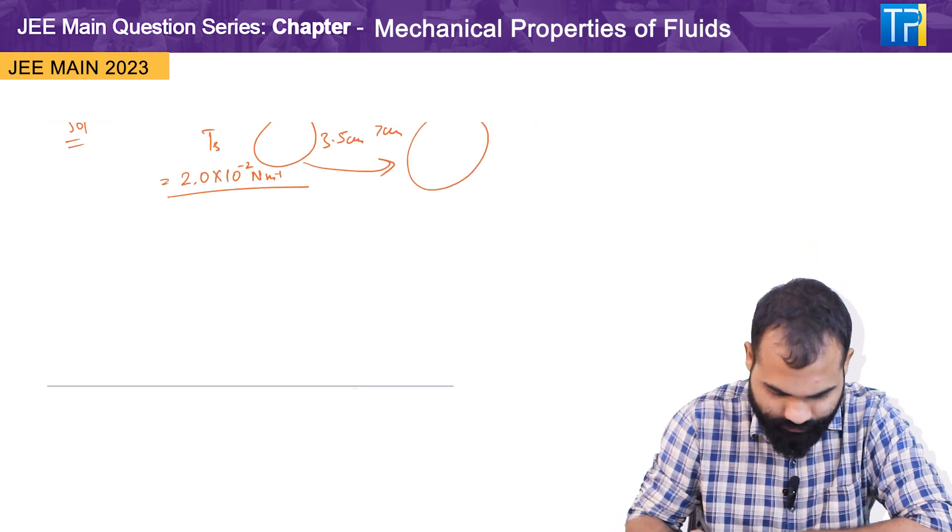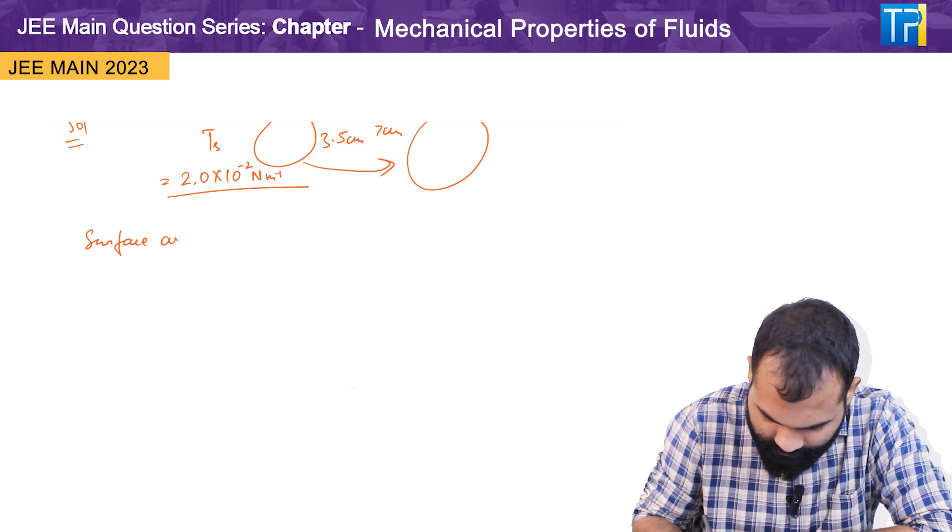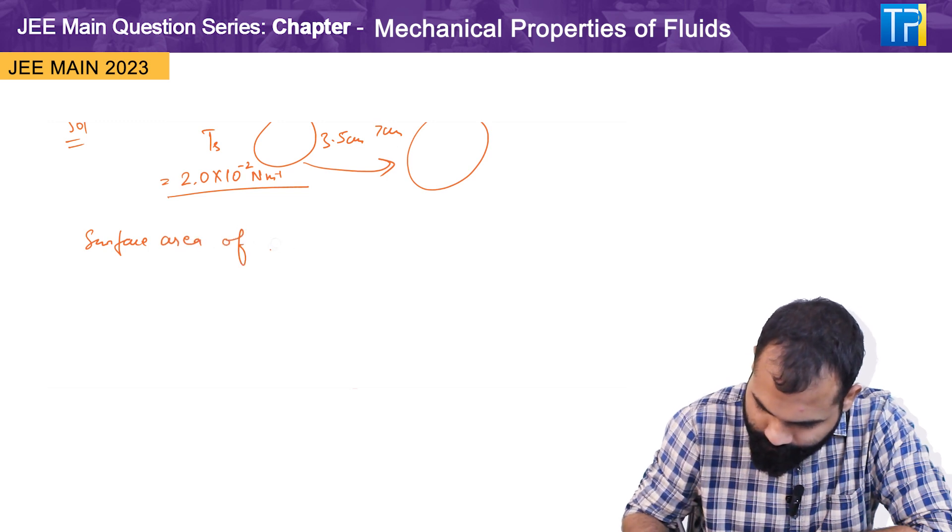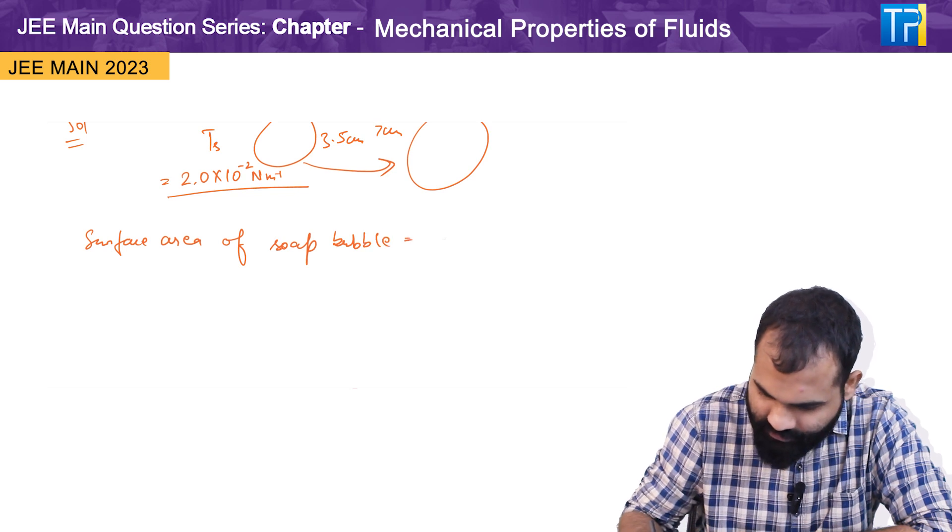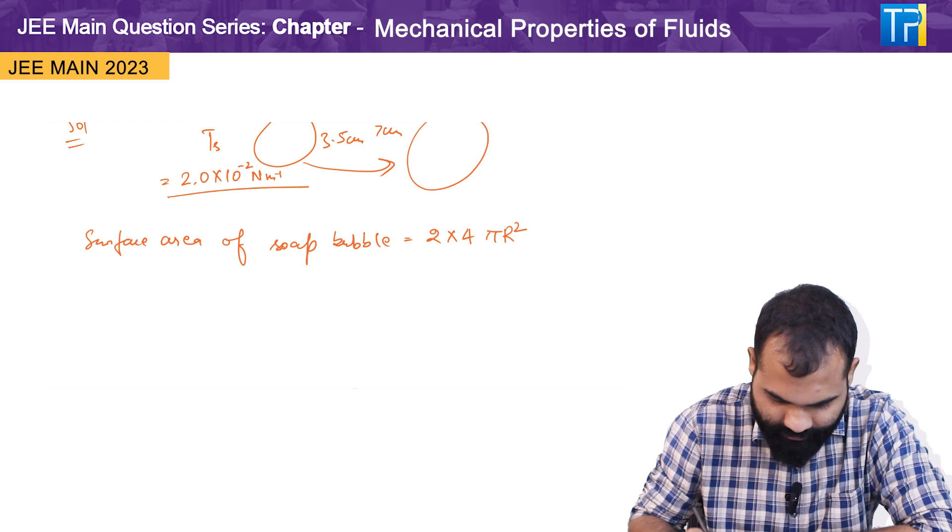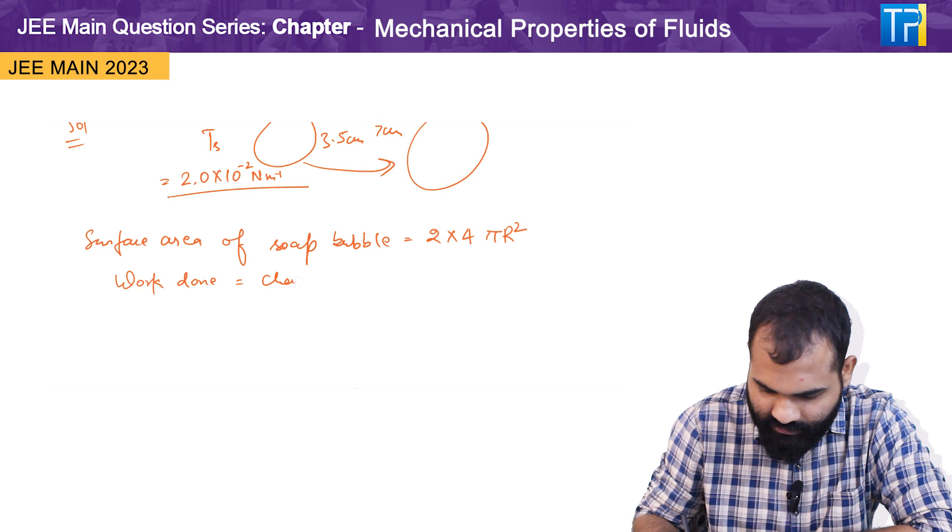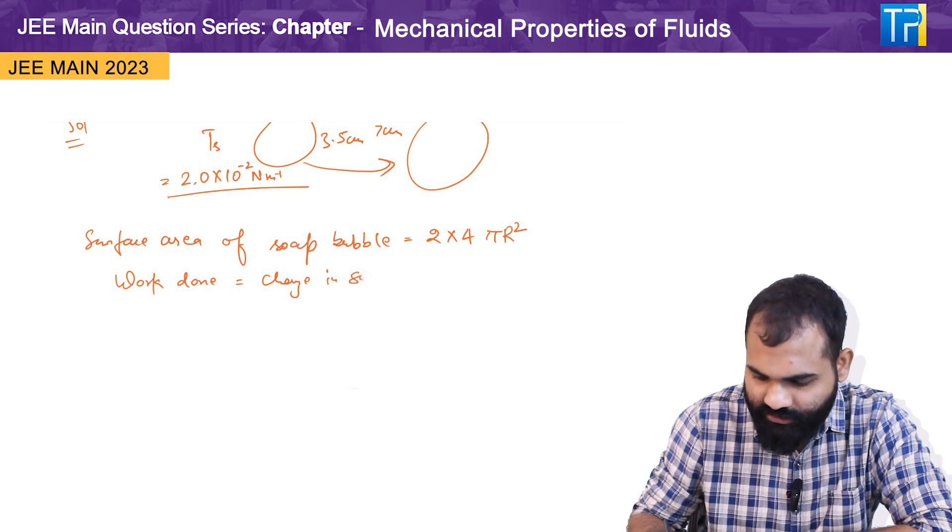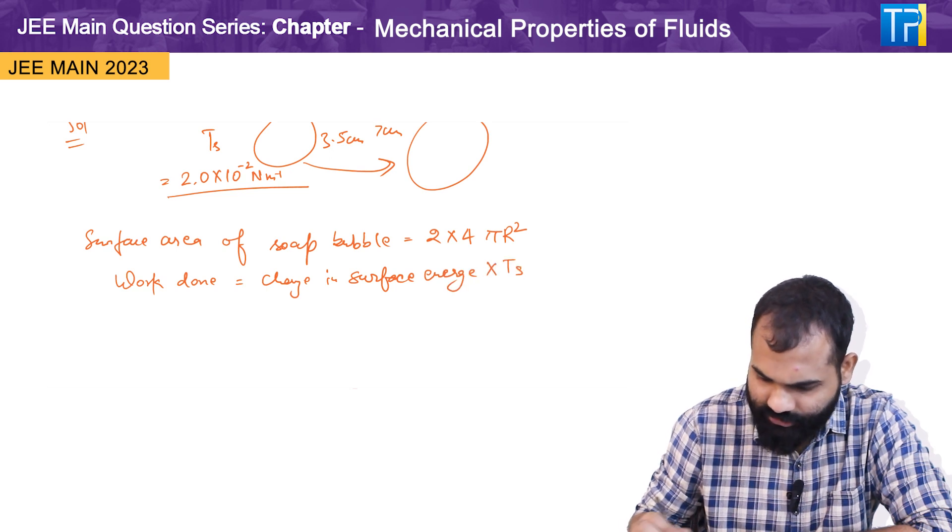The surface area of soap bubble is 2 into 4 pi r square, and work done is the change in surface energy into surface tension.